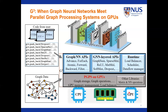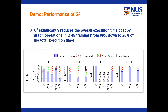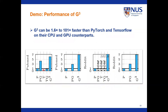In this work, we advocate that by introducing parallel graph processing systems to GNN, we can fundamentally improve graph structure operations and the overall efficiency of GNN training. We developed GQ by extending one of the state-of-the-art parallel graph processing systems on GPUs, with essential neural network operations supported by other libraries. Compared with PyTorch and TensorFlow, GQ contains graph-aware components including graph structure operations, graph data management, workload mapping, and load balancing. GQ significantly reduced graph operations execution time from 80% down to 20% of total execution time, showing 1.6 to 101 times speedup over PyTorch and TensorFlow on their CPU and GPU counterparts.